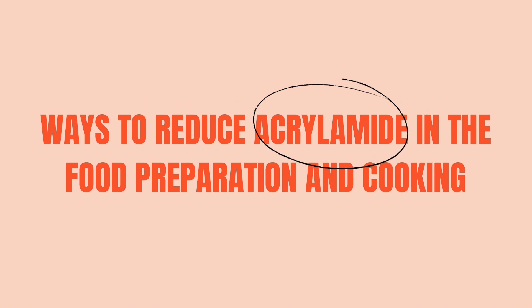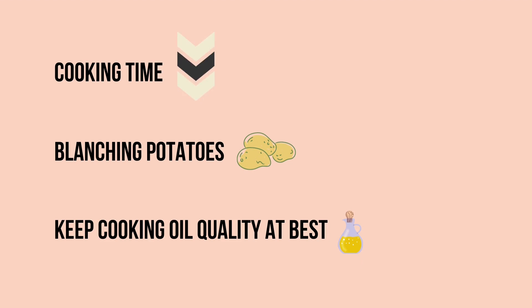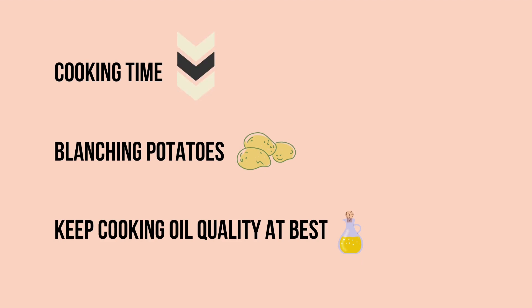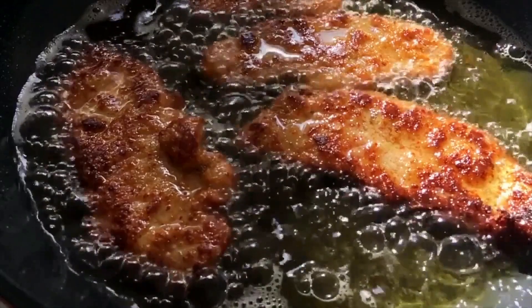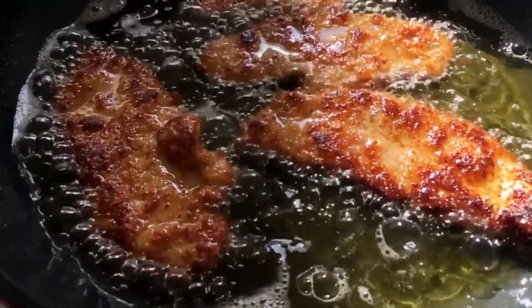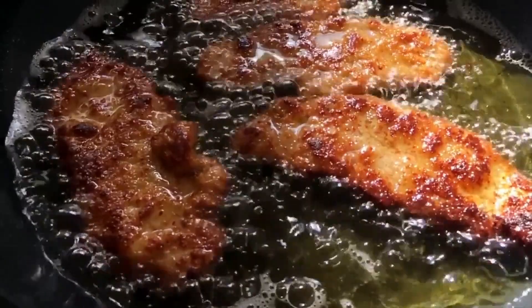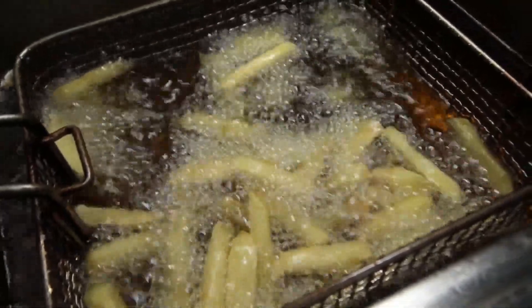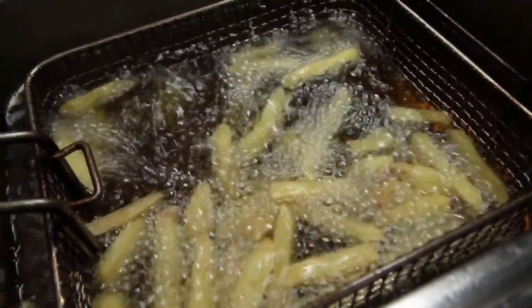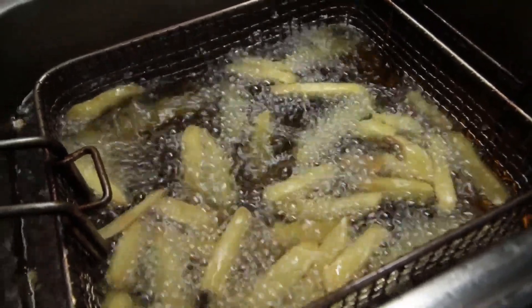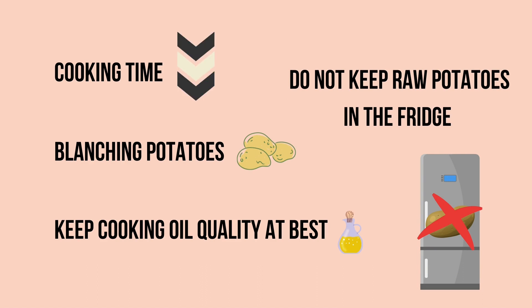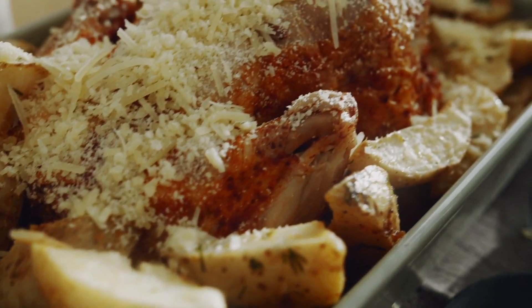Ways to reduce acrylamide in food preparation and cooking: First, decrease cooking time, as more acrylamide accumulates with longer periods or higher temperatures. Second, blanch potatoes before frying and post-drying to help reduce acrylamide formation. Aim for a golden yellow colour or lighter when frying, baking, toasting or roasting starchy foods, and follow cooking instructions on the pack for packaged foods like chips and roast potatoes. Third, keep cooking oil quality at its best by skimming often to remove crumbs and food particles, and filter, change oils and clean cooking equipment as often as needed. Lastly, do not keep raw potatoes in the fridge, as cold sweetening can increase free sugars and overall acrylamide levels, especially if the potatoes are then fried, roasted or baked.